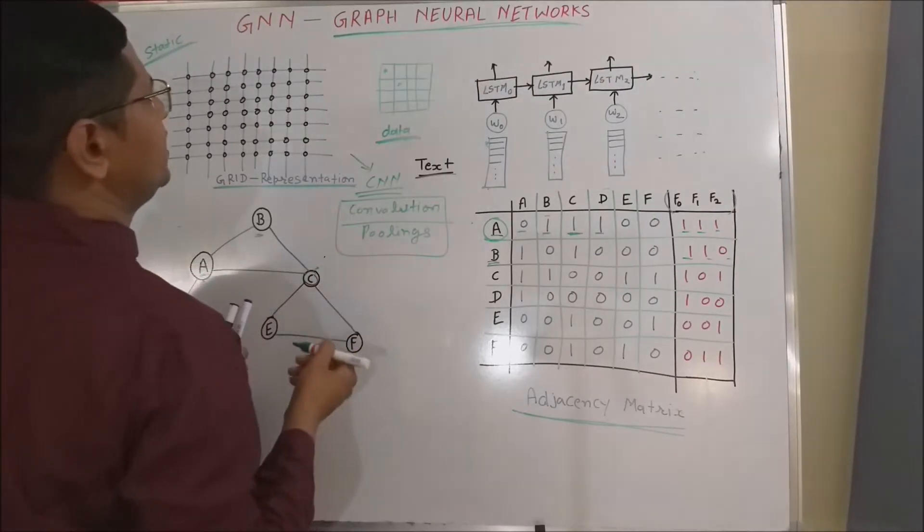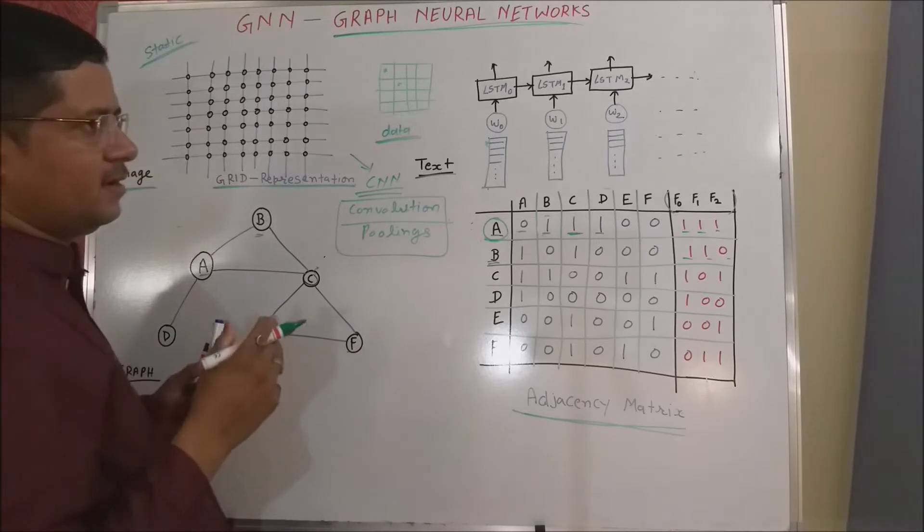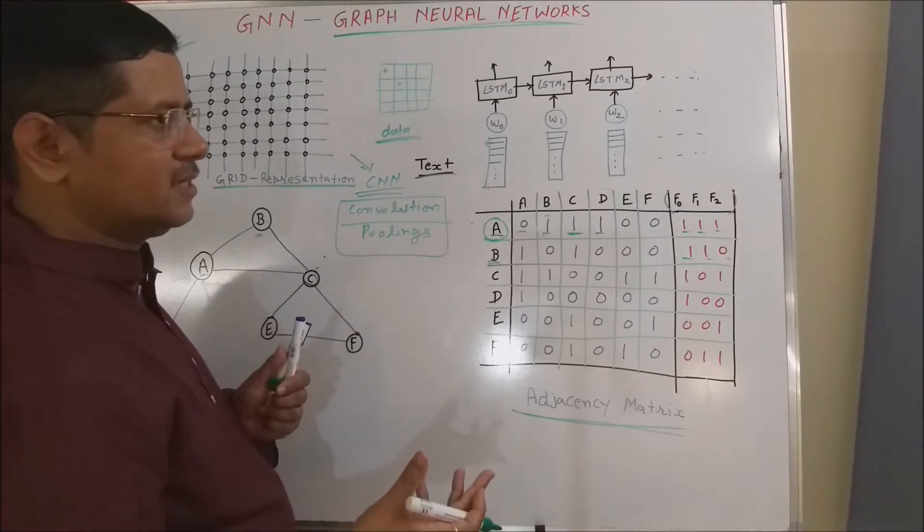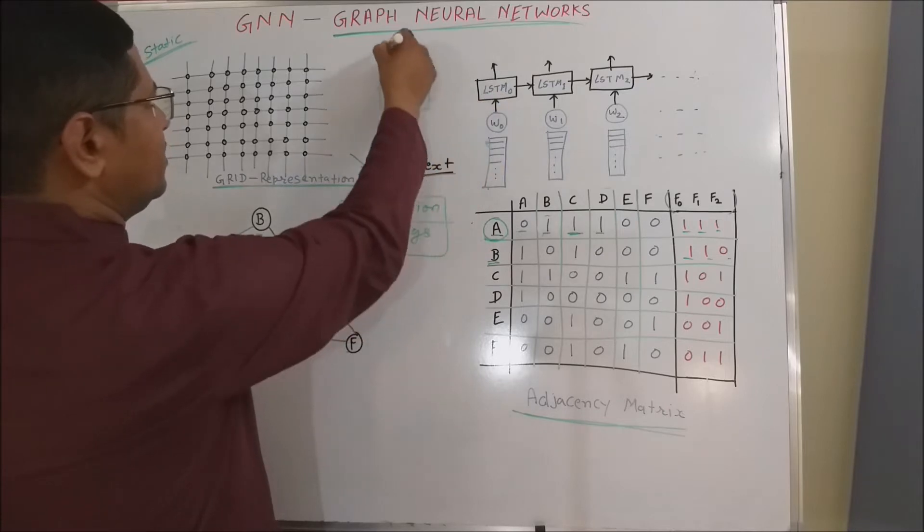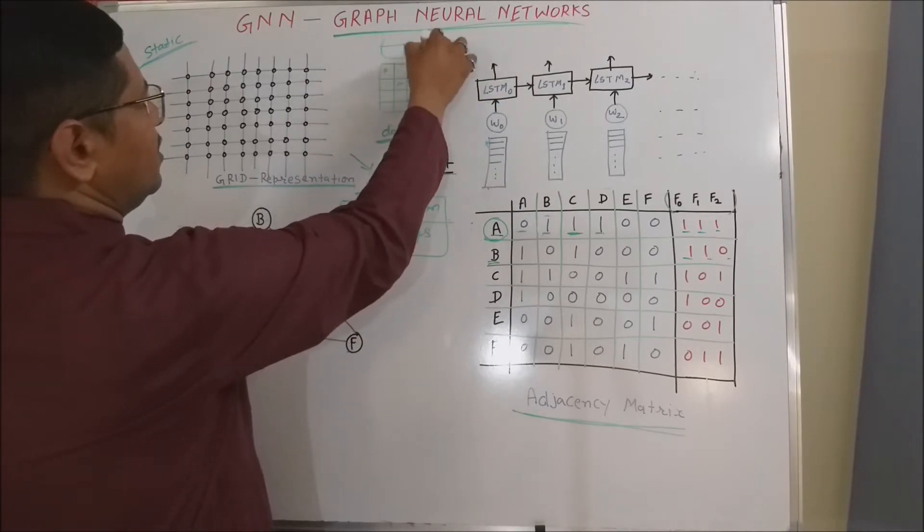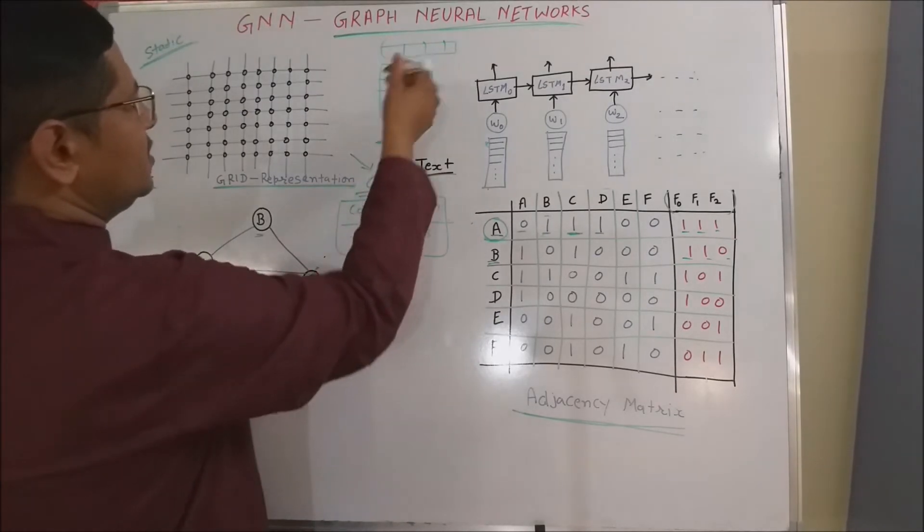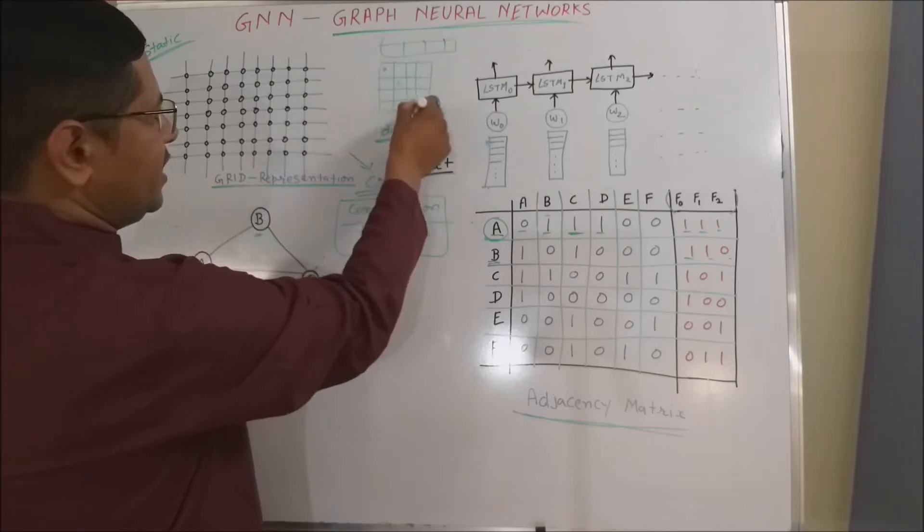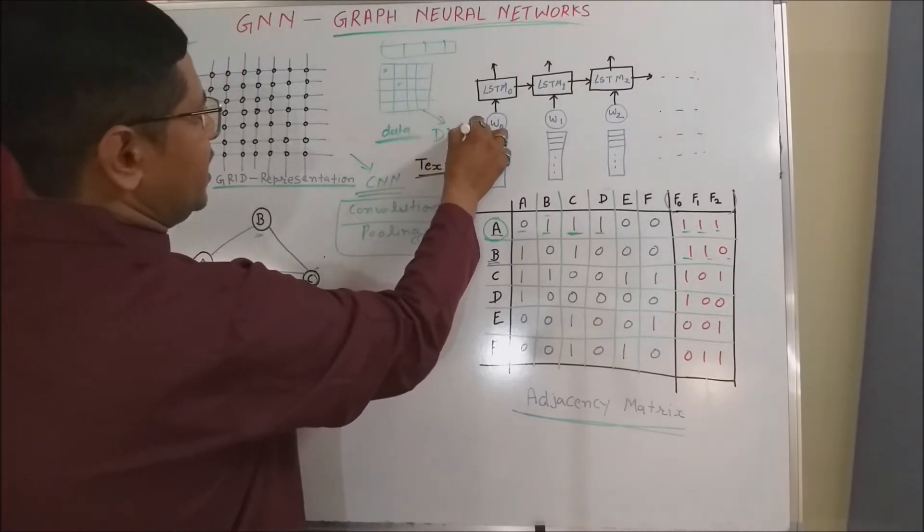Now, let us try to understand the traditional data. The traditional data may be univariate or multivariate time series data. We can easily store the univariate time series data through array and multivariate time series data through matrix. Similarly, we can use the multi-feature data through matrix and we can directly apply it through any of the deep neural network architecture.